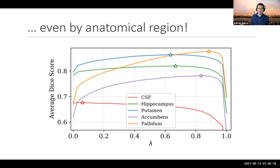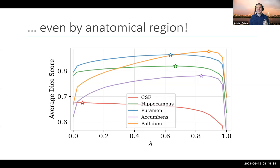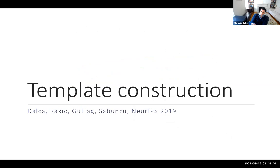All of this shows that a single training with a single hyperparameter value is not optimal for registration — and probably for many tasks. Training one behemoth HyperMorph model is actually a really powerful tool. The optimal hyperparameter varies with data quality, patient age, and the type of registration task.